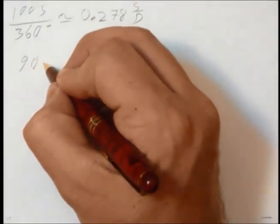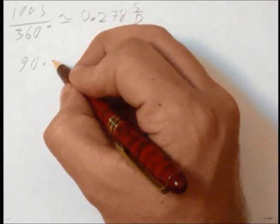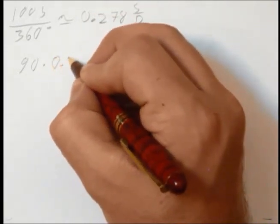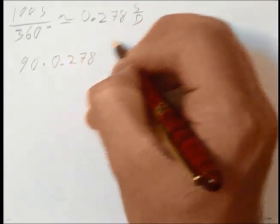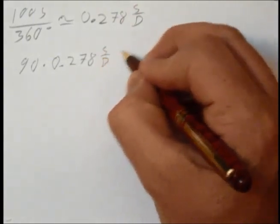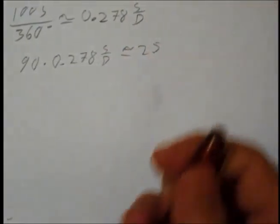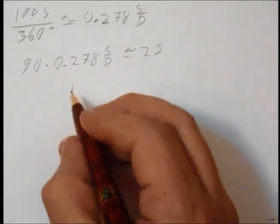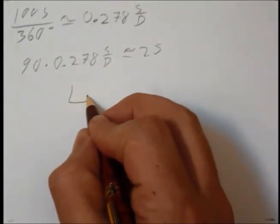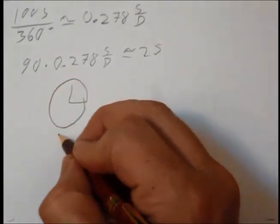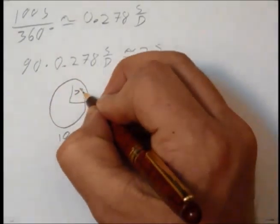So if you want to go 90 degrees, with that number we just found of steps per degree, we will go 25 steps. And this is correct because 90 degrees, 25 steps; 360 degrees, 100 steps.